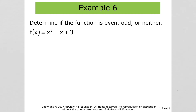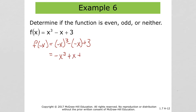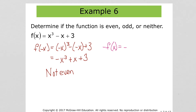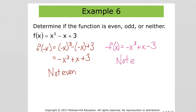Let's look at one more. f(-x) would be negative x³ minus negative x plus 3, which is negative x³ plus x plus 3. That's not the same as the original, so we are not even. Then testing for odd by looking at negative f(x): that is negative x³ plus x minus 3. That's also not the same because the minus 3 doesn't match. So this function is also neither even nor odd.